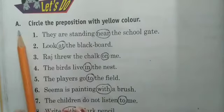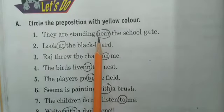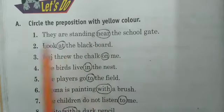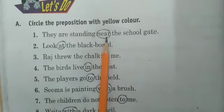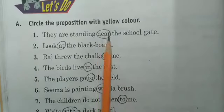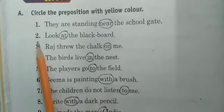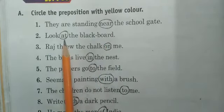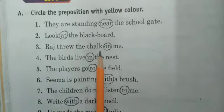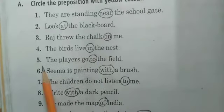Now I will explain the exercise of this chapter — circle the preposition with yellow color. First: they are standing near the school. Second: look at the blackboard — 'at'. Third: rush through the chalk on me — 'on'. Fourth: the bird lives in the nest — 'in'. Fifth: the players go to the field — 'to'.